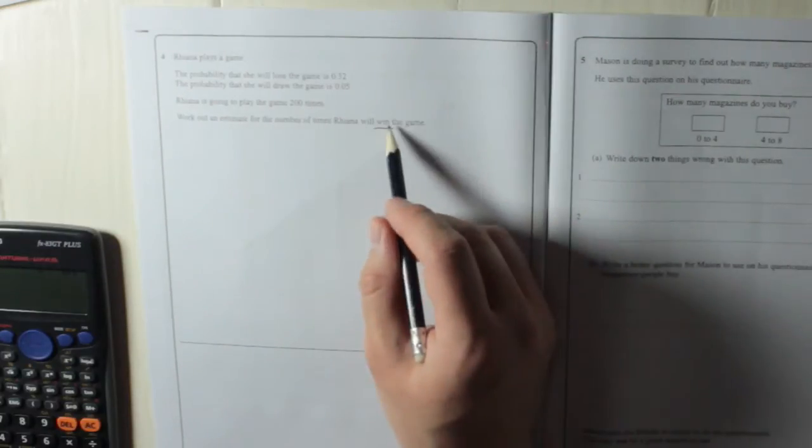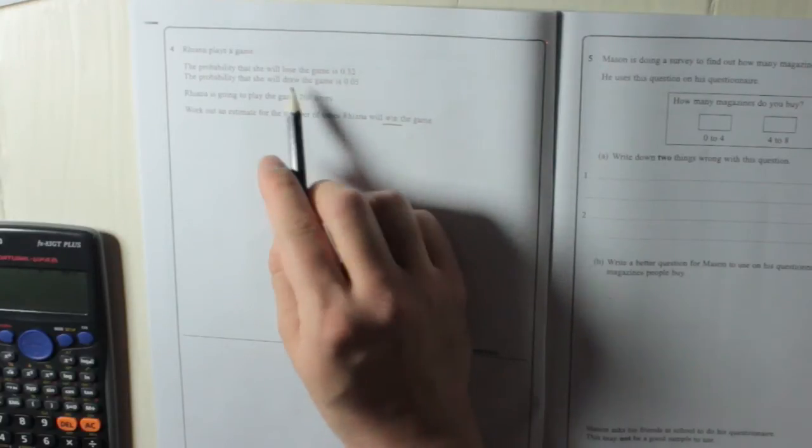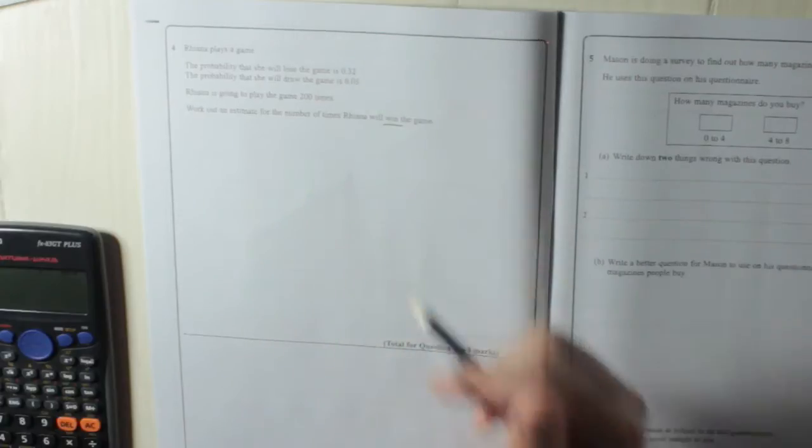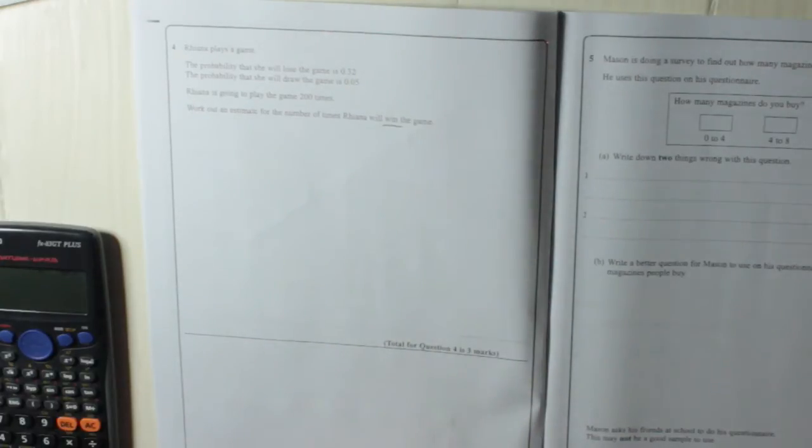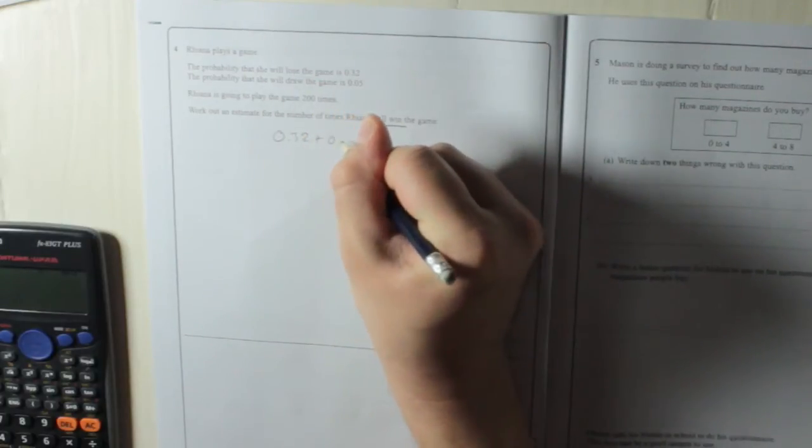So we need the probability that she's going to win. We know the probability that she's going to lose is 0.32. Draw is 0.05. Now the three probabilities should add up to one. So I'm going to add 0.32 to 0.05.